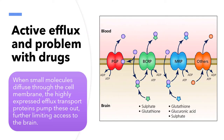Efflux transporters of the ATP-binding cassette gene family are increasingly recognized as important determinants of drug distribution to and elimination from the central nervous system. Efflux pumps can move a variety of different toxic compounds out of cells, such as antibiotics, heavy metals, organic pollutants, plant-produced compounds, quorum sensing signals, and bacterial metabolites — and even neurotransmitters. This is active efflux.